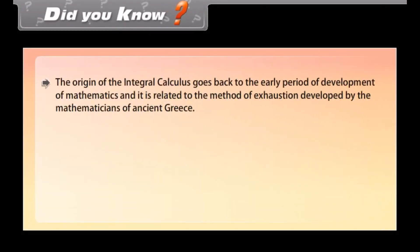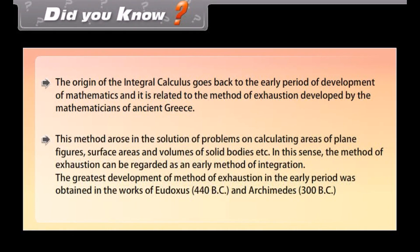The equation of integral calculus goes back to the early period of development of mathematics and is related to the method of exhaustion developed by mathematicians of ancient Greece. This method arose in the solution of problems on calculating areas of plane figures, surface areas, and volumes of solid bodies. The greatest development of the method of exhaustion in the early period was obtained in the works of Eudoxus (440 BC) and Archimedes (300 BC).